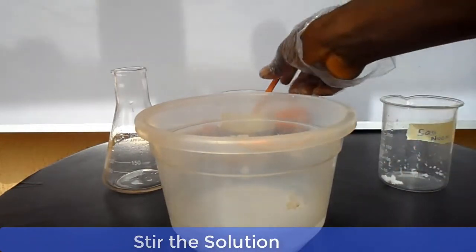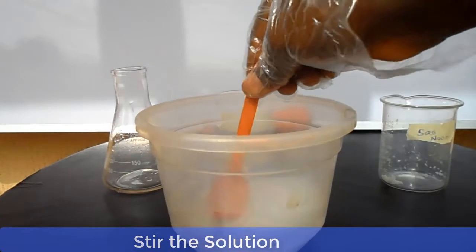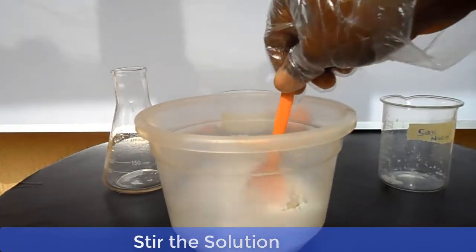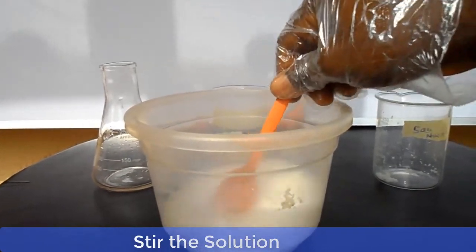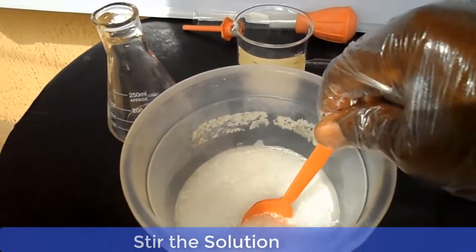Now stir the solution until all the caustic soda dissolves. At first it will appear cloudy, but as you continue the stirring, it then starts to clear up gradually.